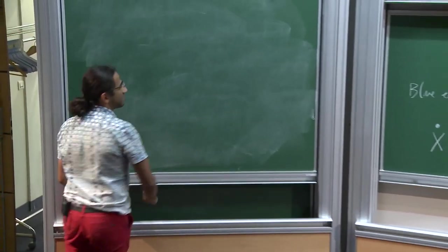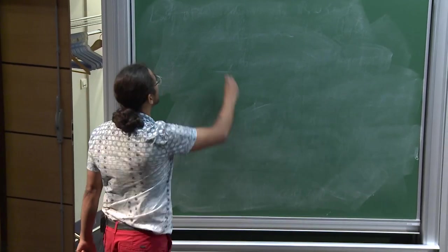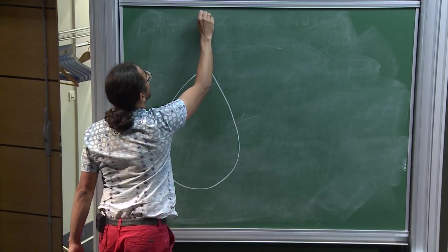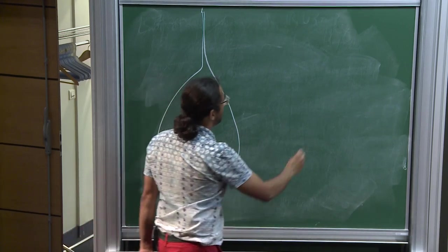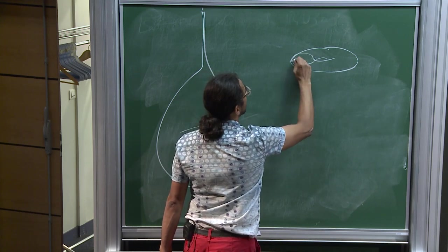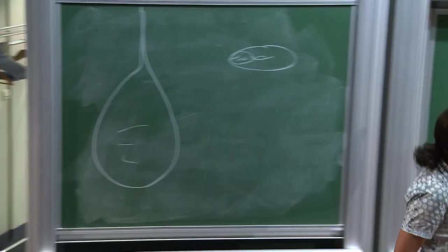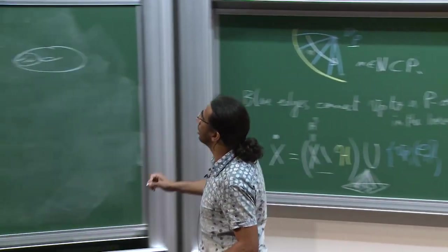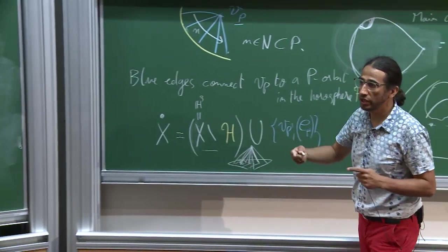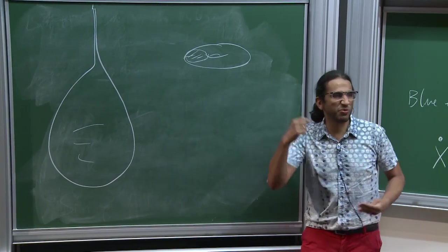What we just did is take a hyperbolic 3-manifold with finite volume, again I'm drawing it with one cusp. And we decided to glue a solid torus on a section of the cusp, and we choose a slope on which to glue it.